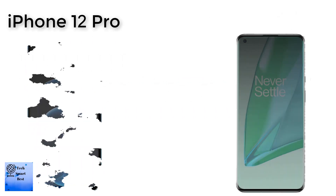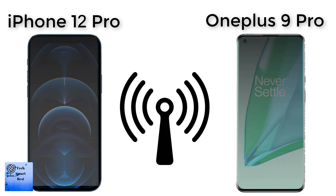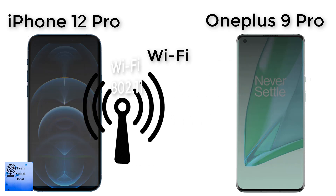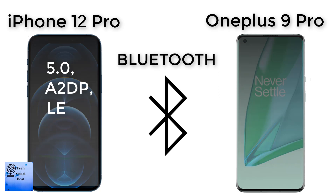The connectivity comparison between both smartphones. The Wi-Fi of the OnePlus 9 Pro is Wi-Fi 802.11 dual band, DLNA, and hotspot. The Wi-Fi of the Apple iPhone 12 Pro is Wi-Fi 802.11 dual band and hotspot.